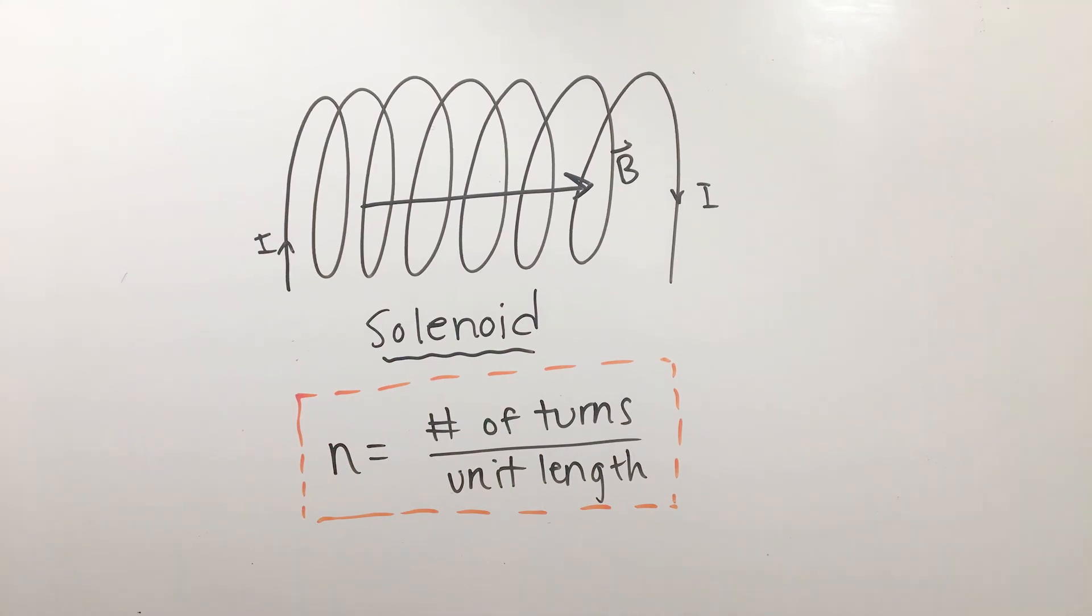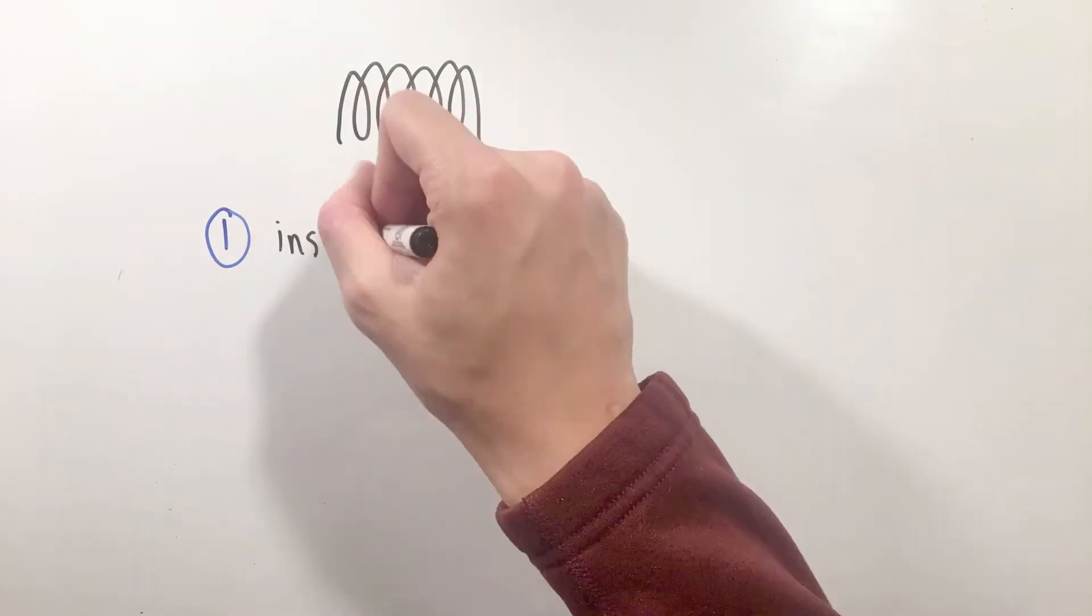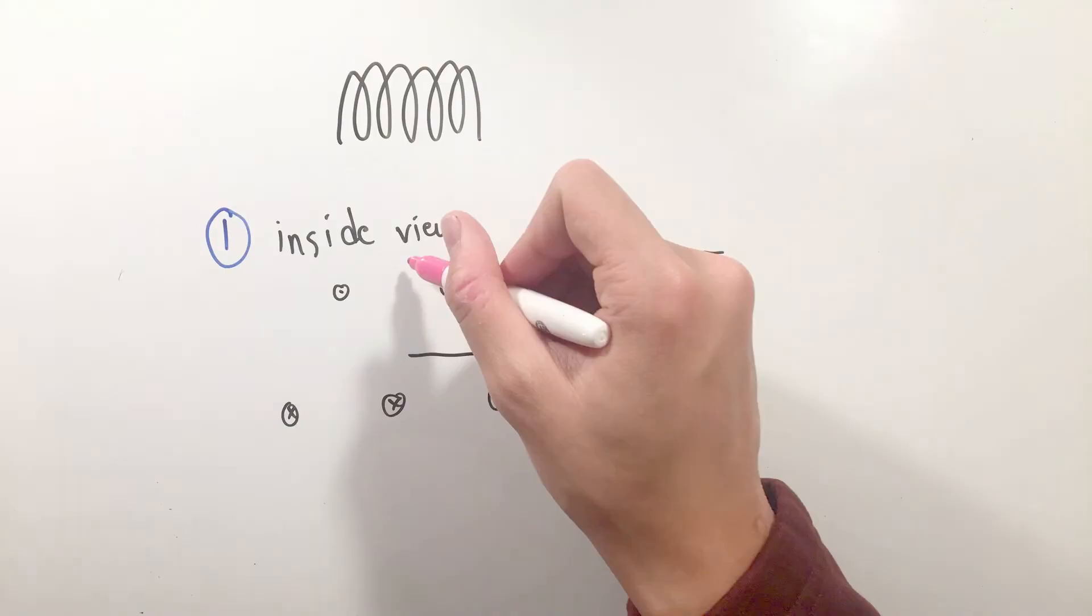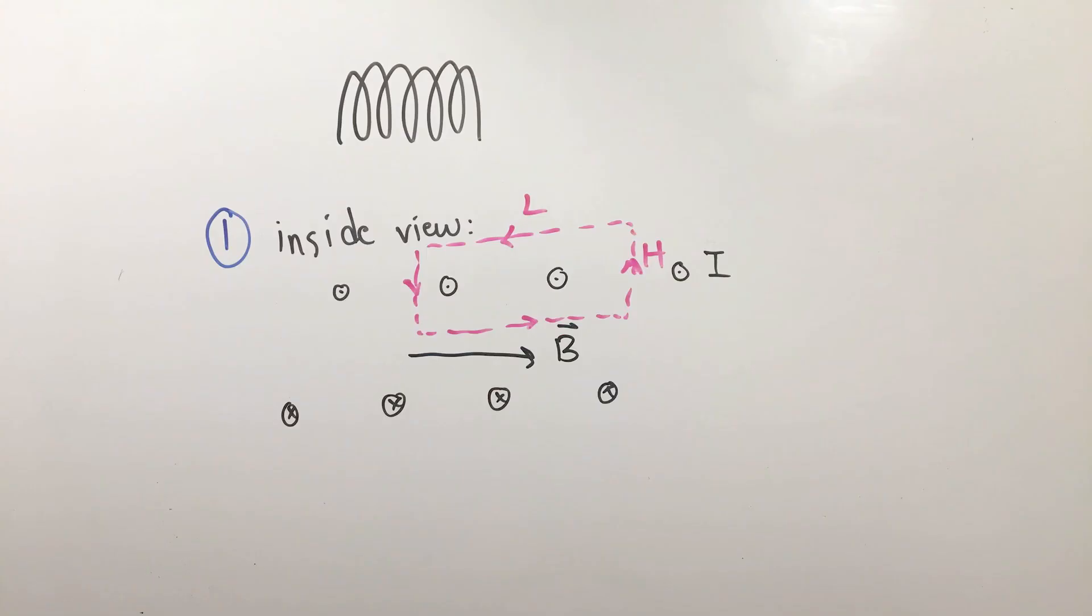Because our magnetic field is uniform and straight inside, let's make our Amperian loop a rectangle with height h and length l that is parallel to the solenoid's axis. In addition, let's integrate along this rectangle in the counterclockwise direction to align with our magnetic field.